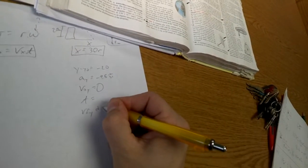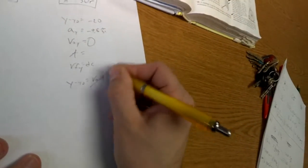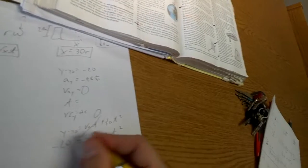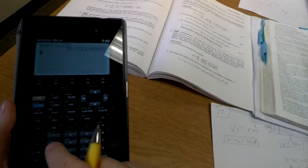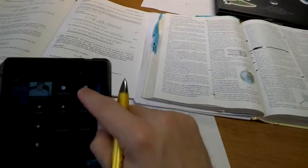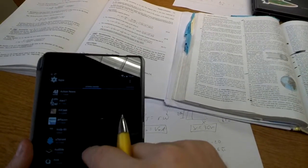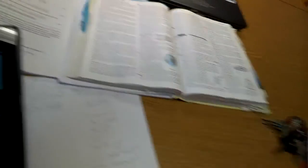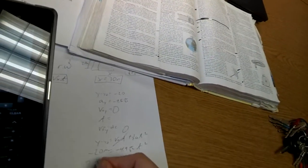So, y minus y naught, v naught t, plus one half at squared. This goes away, we get negative 4.9 times t squared equals negative 20. And we're going to get a value for t. Let's do 20 divided by 4.9 to the one half power, same difference, taking the square root of both sides, and we get a time, a hang time, of 2.02 seconds.